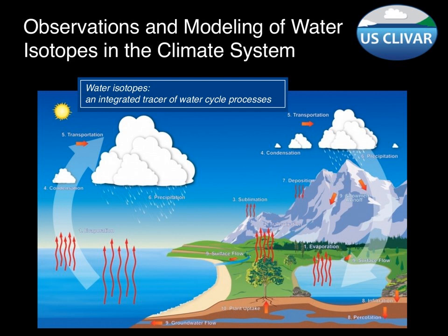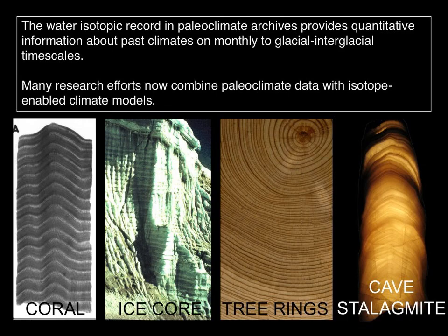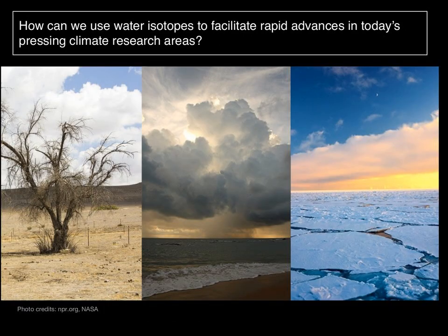Some of this atmospheric signal gets transferred into and then preserved in different paleoclimate archives, things like corals and ice cores and tree rings, speleothems, and also lake sediments. Because moisture transport is tightly tied to the overall climate state, the water isotope ratios preserved in these paleo archives give us important insight into what climate looked like in the past. Our working group is interested in leveraging all of this diverse information recorded in water isotope ratios to address some of the critical knowledge gaps in climate science and understanding climate variability and change today.